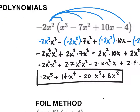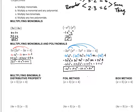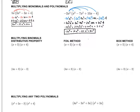Now, for multiplying binomials, I'm going to show you three different methods: the distributive property, the FOIL method, and the box method. All three give you the exact same answer. Some people prefer the distributive property, some like FOIL, some like the box method. I grew up liking FOIL, but I've come to prefer the box method. I'll show all three so you can choose.